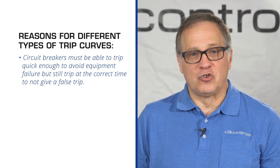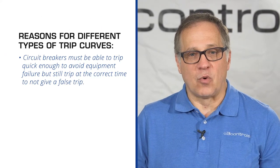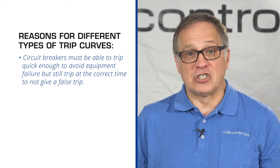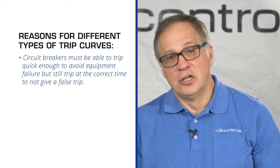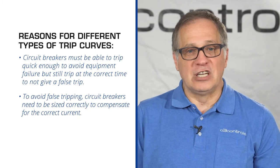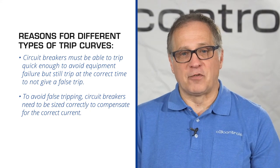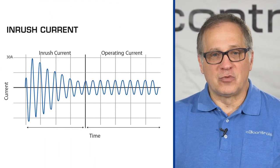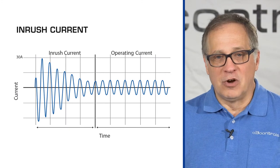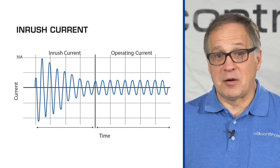We need different types of trip curves because circuit breakers must be able to trip quickly enough to avoid equipment or wiring failure, but not so fast as to give a false or nuisance trip. To avoid nuisance trips, circuit breakers need to be sized appropriately to compensate for inrush current. Neiman defines instantaneous peak inrush as the momentary current transient that occurs immediately within half of an AC cycle after contact closure. Inrush current is what causes the lights to dim in your house when a motor such as that on a clothes dryer or vacuum cleaner starts up.